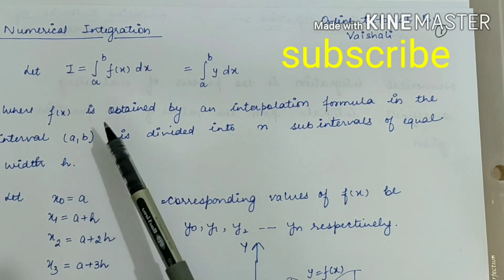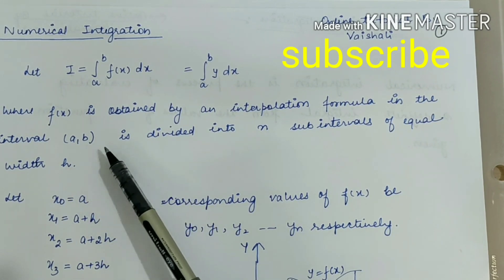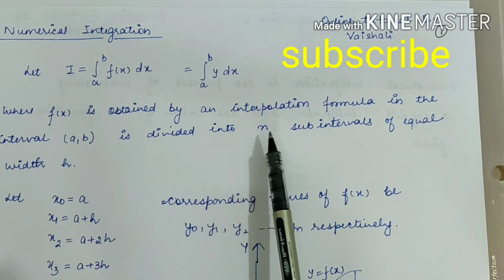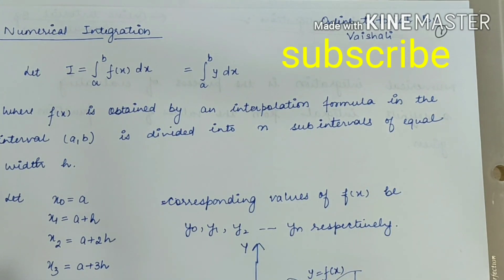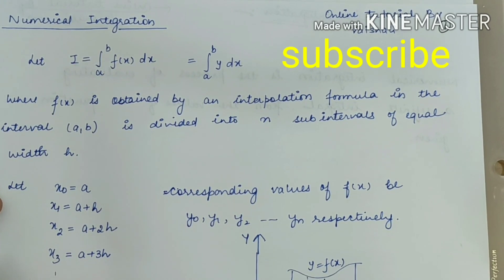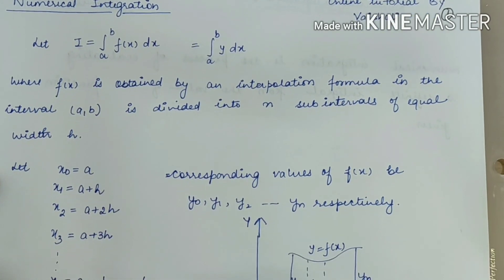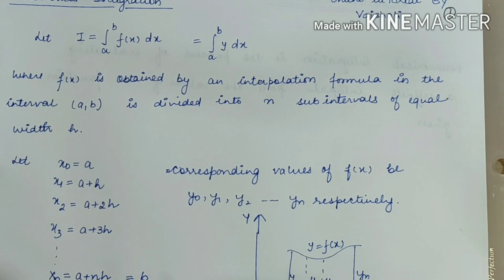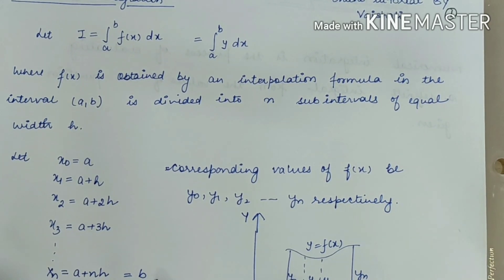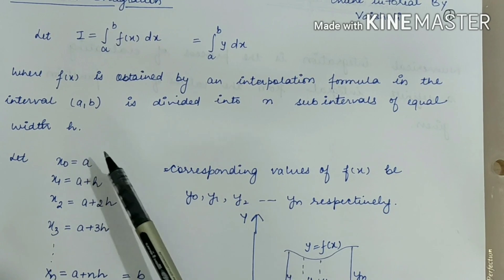In numerical analysis, we have different values of x, and with respect to those values of x we find the values of y with respect to the function f(x). The initial and final values of x tell us about the interval. We divide the given interval into n sub-intervals, and those intervals are equidistant to each other.